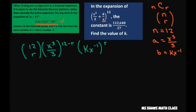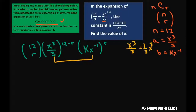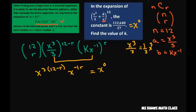Now we want to first solve for r. We're going to look at just the x terms. x cubed divided by 3 is really one third times x cubed, so looking at just the x's, we take x cubed to the 12 minus r, times x to the negative 1 to the r. We want this to equal x to the zero because this is our constant term. Combining the x terms, we have x to the 36 minus 3r, times x to the negative 1r.